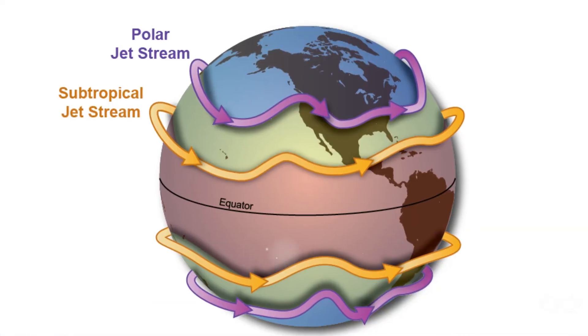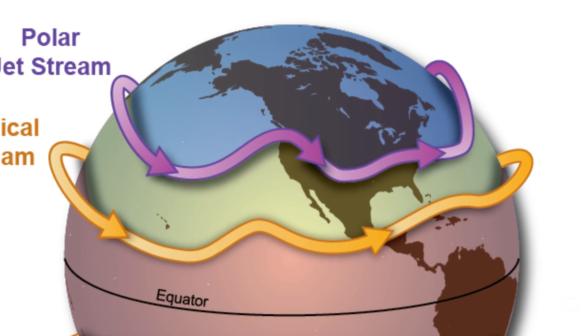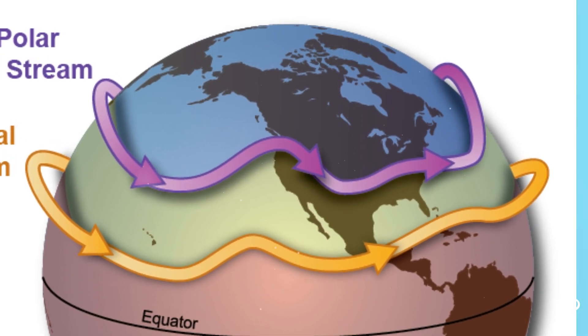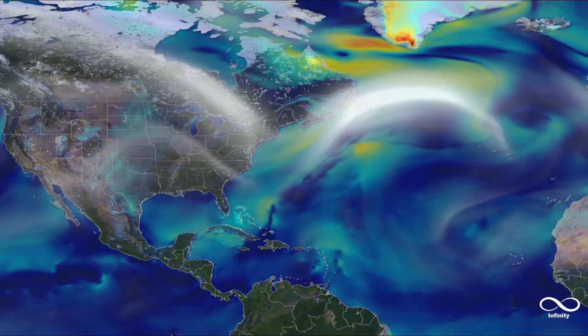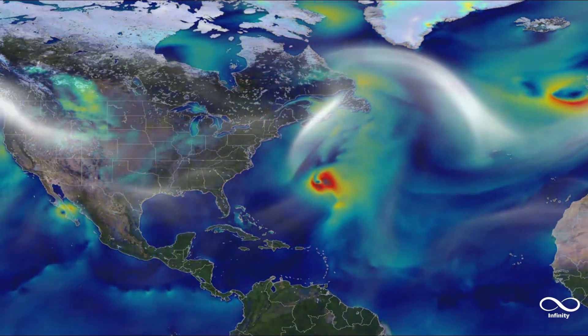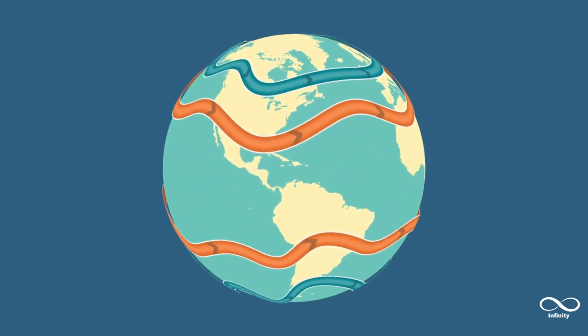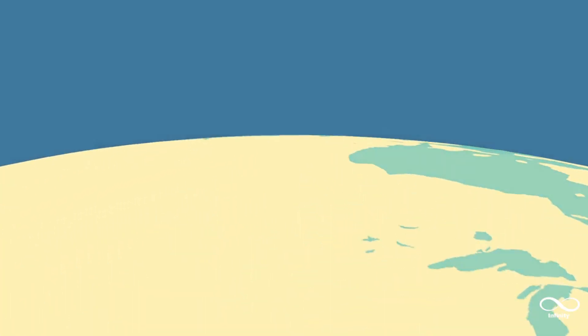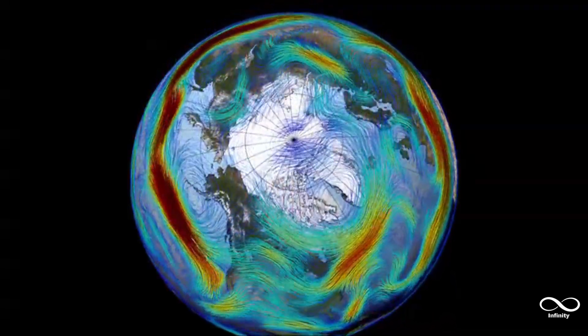The strongest jet streams are the polar ones, located around 7 to 12 km above sea level, and the higher and weaker subtropical jet streams, around 10 to 16 km. In their core, they can travel at speeds of up to 400 km per hour. They form when masses of air with different densities meet, and the pressure created by these density differences causes the winds to intensify. When these winds attempt to flow from the warmer region of the nearby stratosphere to the colder troposphere, they are deflected by the Coriolis effect, and flow along the boundaries of the two original air masses. In the Northern Hemisphere, the polar jet stream circulates from west to east around the North Pole, and acts as an invisible barrier between the cold air of the polar vortex and the warmer air to the south.